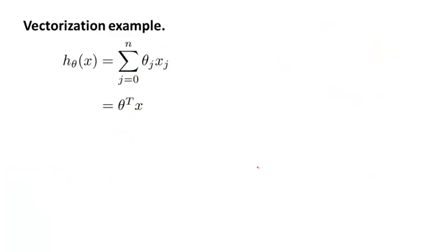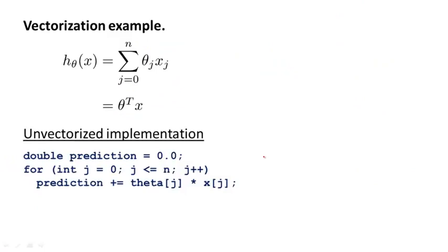So that was Octave, but the issue of vectorization applies to other programming languages as well. Let's look at an example in C++. Here's what an unvectorized implementation might look like. We again initialize prediction to 0.0, and then we now have a for loop for j equals 0 up to n. Prediction plus equals theta j times xj, where again you have this explicit for loop that you write yourself.